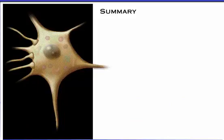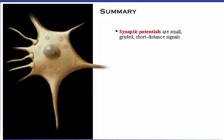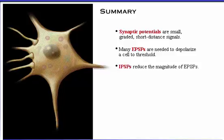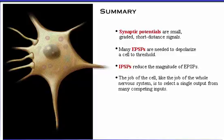Here's a summary of what we've covered. Synaptic potentials are small, graded, short-distance signals. Many excitatory postsynaptic potentials are needed to depolarize a cell to threshold. Inhibitory postsynaptic potentials reduce the magnitude of excitatory postsynaptic potentials. The job of the cell, like the job of the whole nervous system, is to select a single output from many competing inputs.